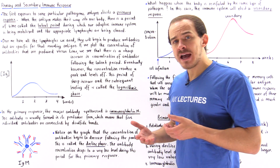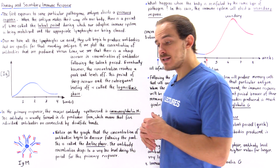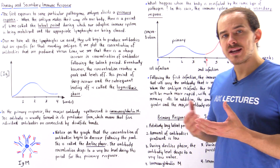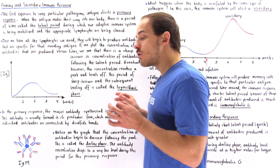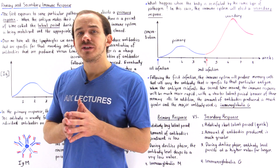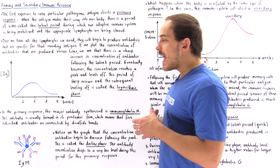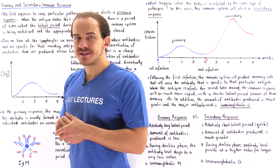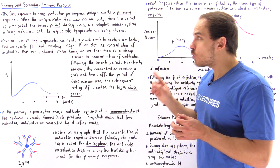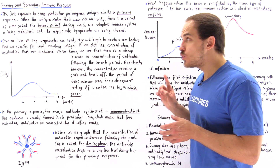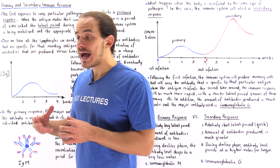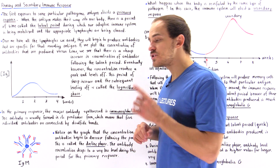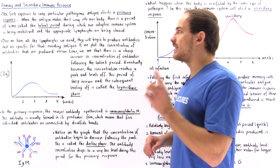Right away when we're infected, the innate immune system kicks in and we can have the process of inflammation take place, which essentially prevents that infection from spreading to other parts of our body. But our adaptive immune system will actually take time to take effect. We're going to have to wait for our adaptive immune system to mobilize itself and create the appropriate lymphocytes needed to produce those antibodies.